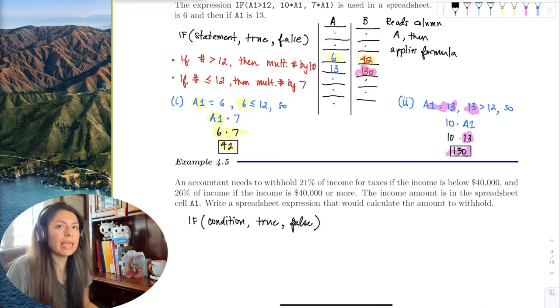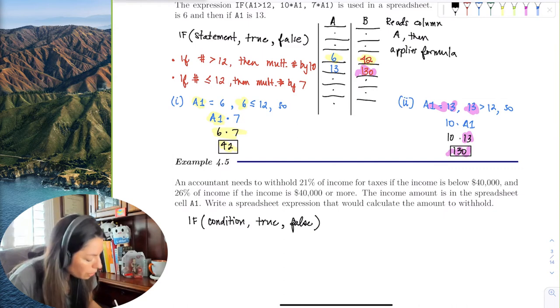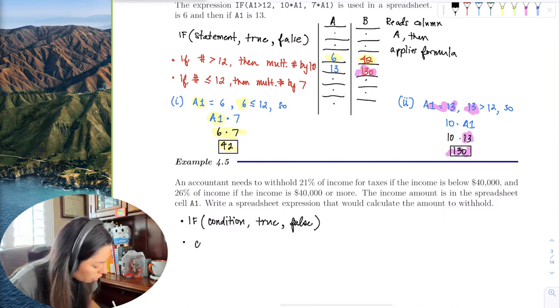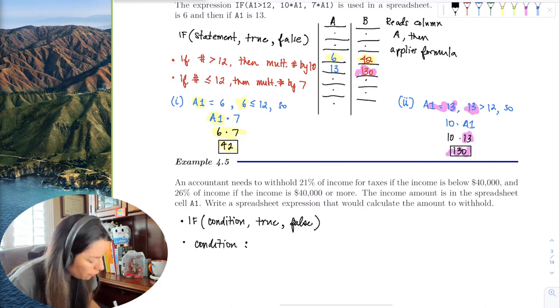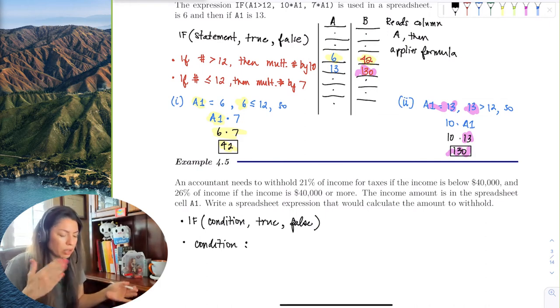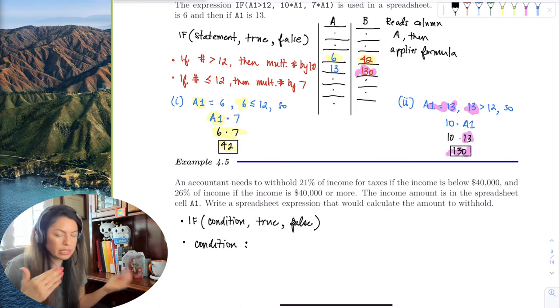So that's what we have to decide. The main condition here is the income. If the income is below $40,000, it pays a certain percentage, and if it's above $40,000...